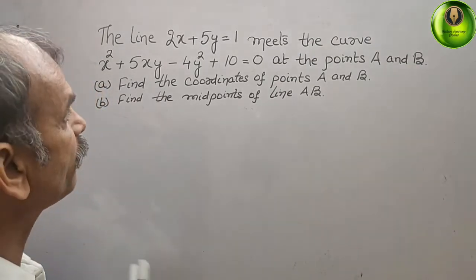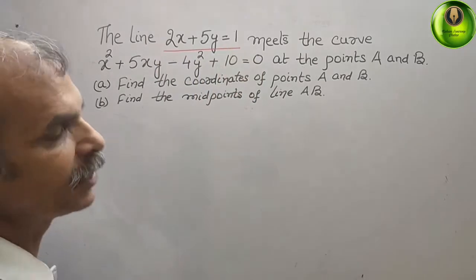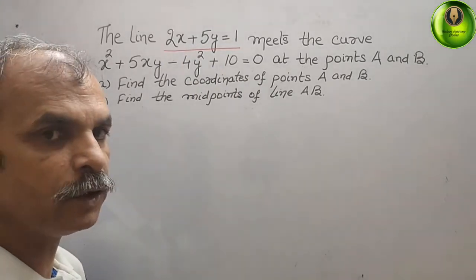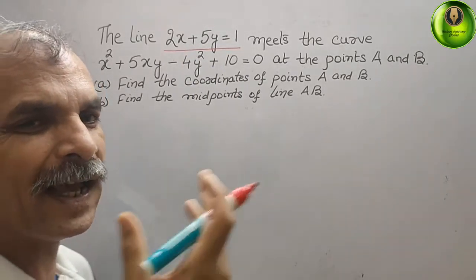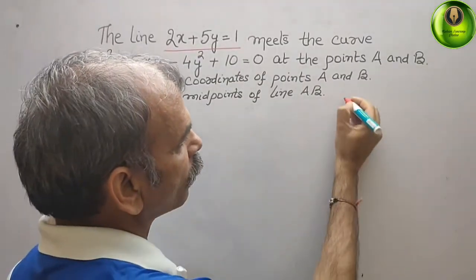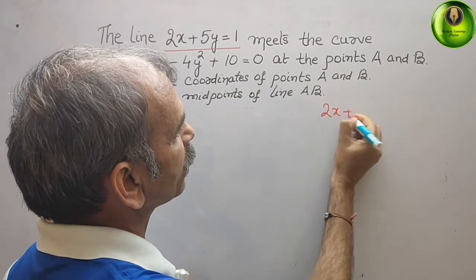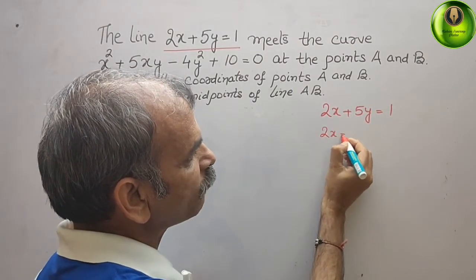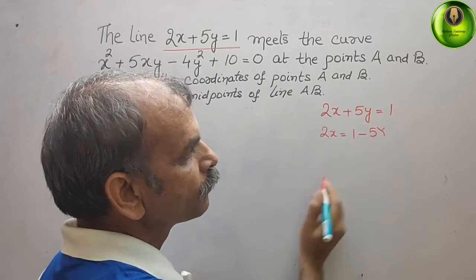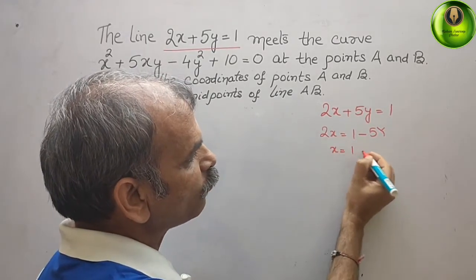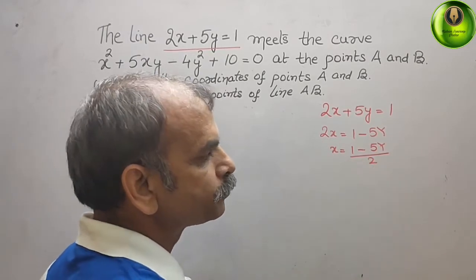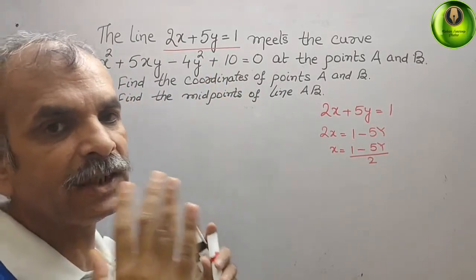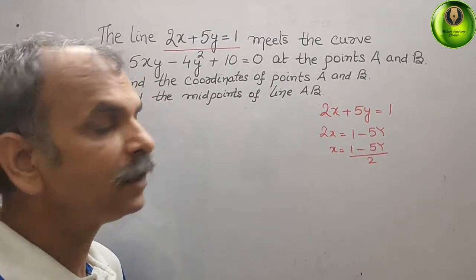We have been given the line equation 2x + 5y = 1. From this, we get 2x = 1 - 5y, so x = (1 - 5y) / 2. Now we substitute this value of x into the second equation, the curve.